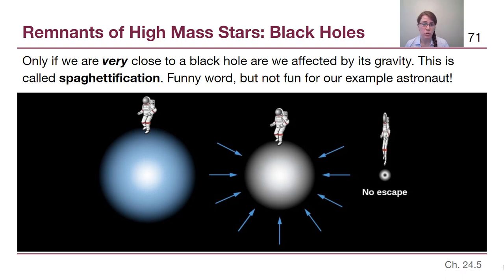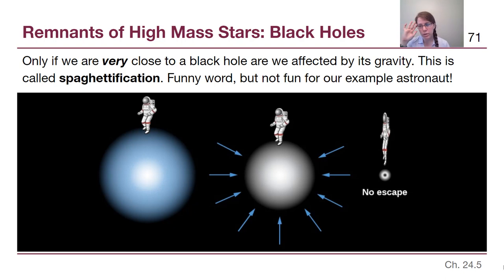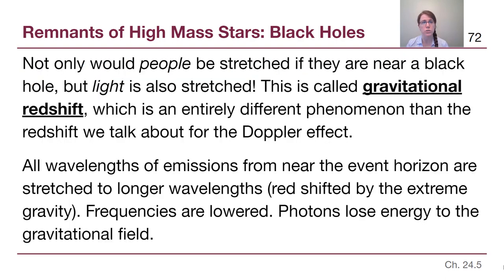If we are extremely close to a black hole, we are affected by its gravity. There is a scientific term called spaghettification — it's a funny word, but it's not very fun for our example astronaut. The force of gravity on the astronaut's feet would be drastically different than on their head, and they would be stretched out. It's a much more visually understandable example for something that also happens to light photons.